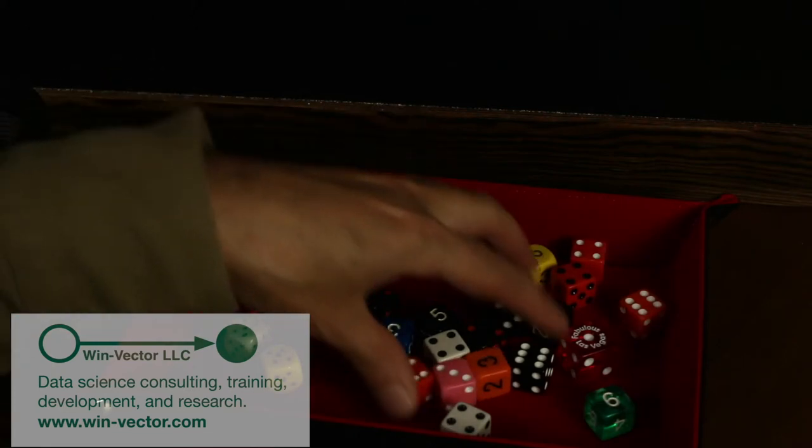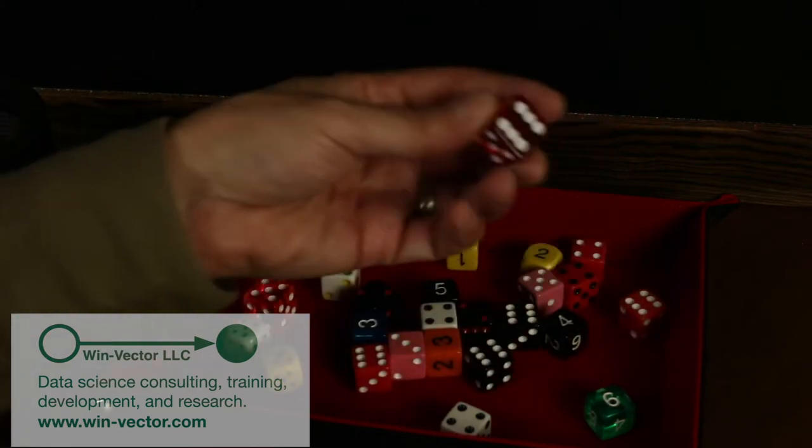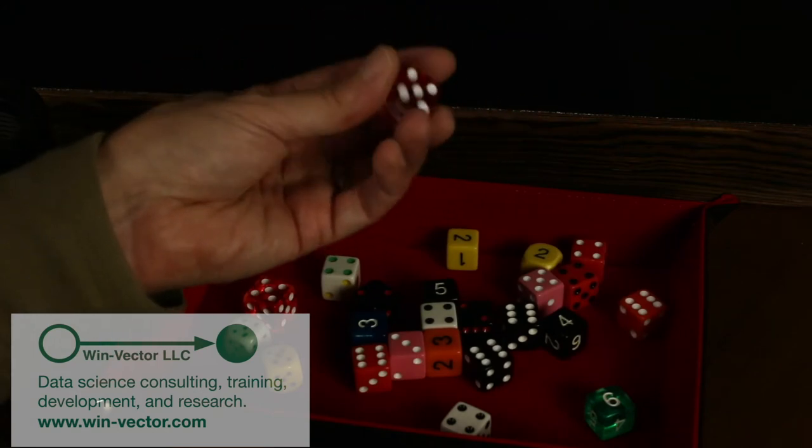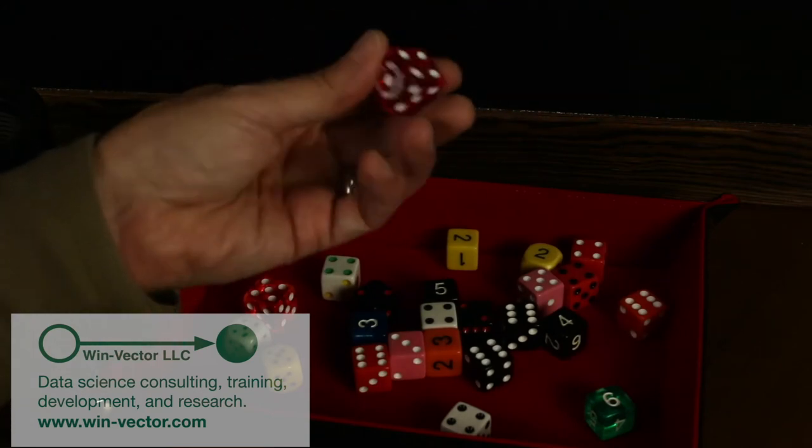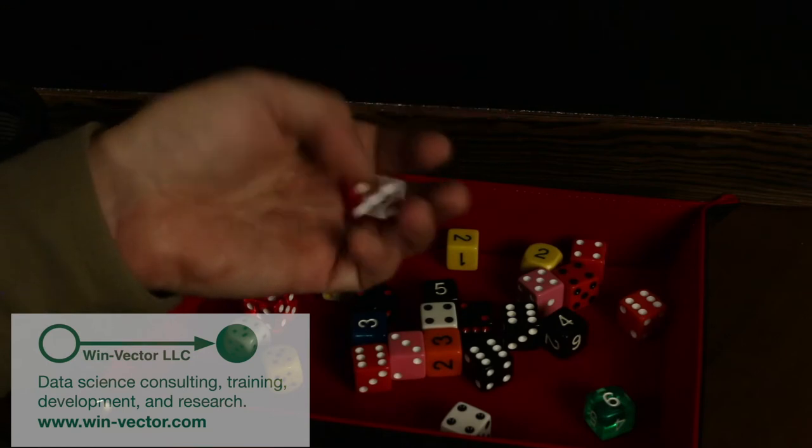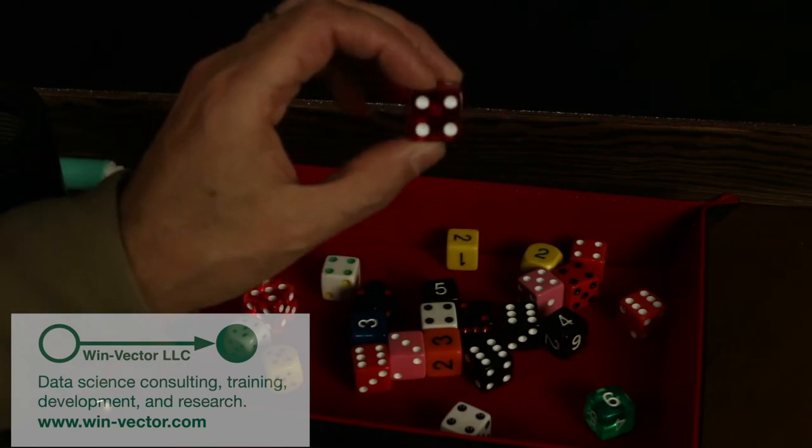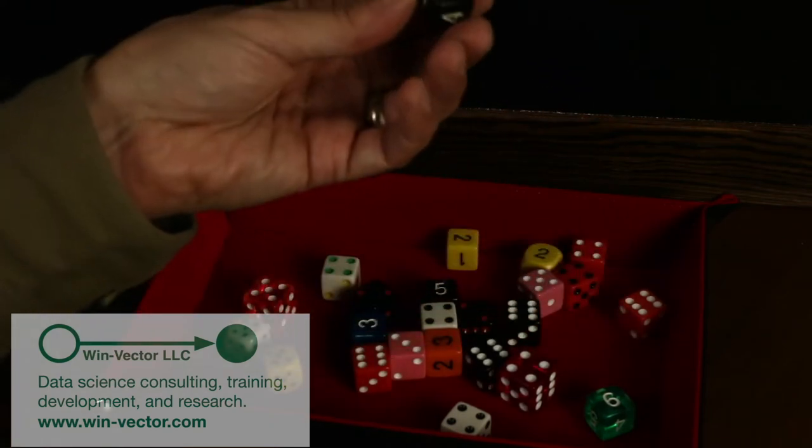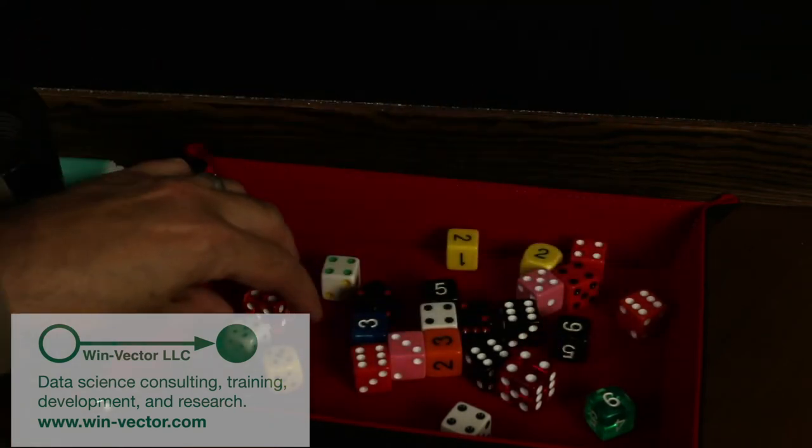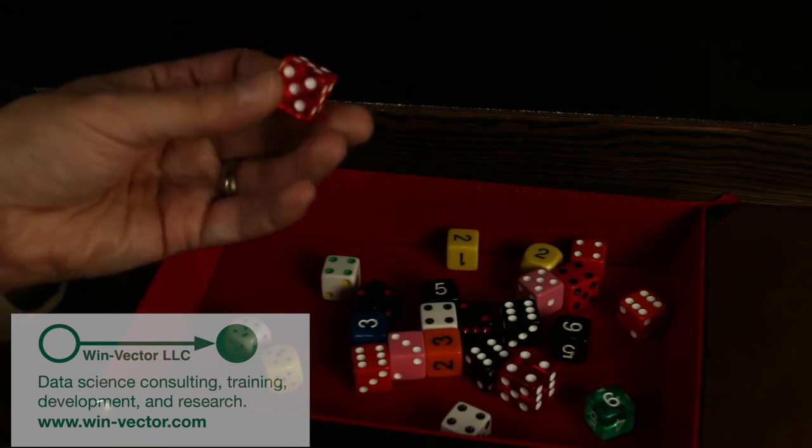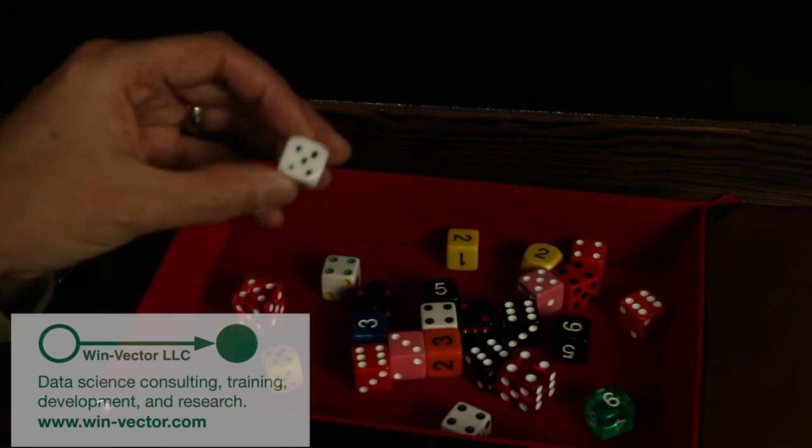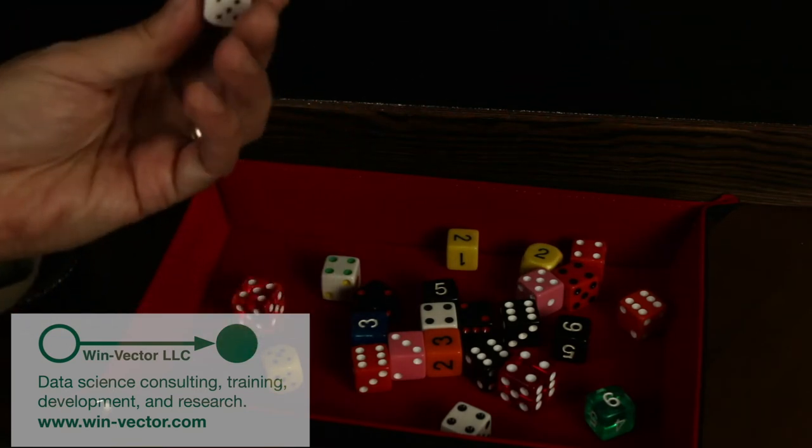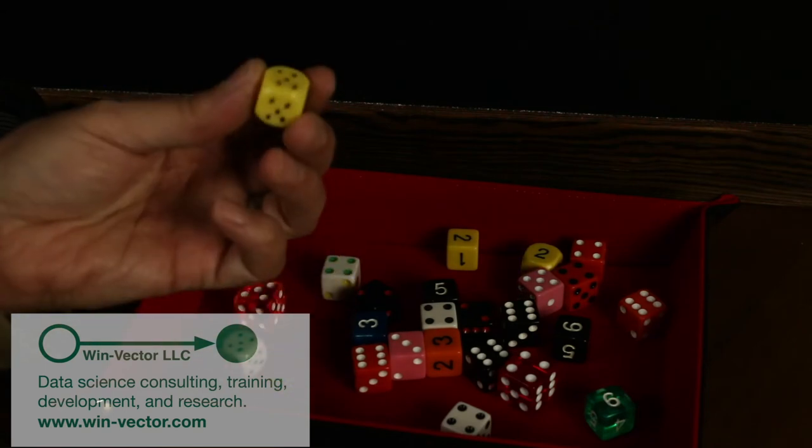So here we have a bunch of fair, normal, six-sided dice. They have an equal probability of coming up on any one of the sides, which are labeled one through six. So the expected value or average number of pips or number on these dice is 3.5. Here we have some special dice. These are dice that every single face has a five.